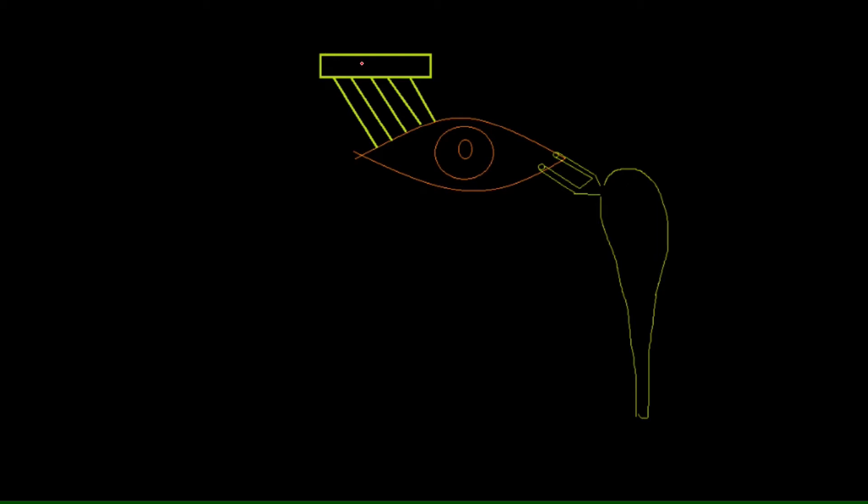The lacrimal gland is an exocrine gland. It has ducts, about 10 to 12 ducts. They pierce the conjunctiva. Let me tell you where. Here's the eyelid, here's the eye.